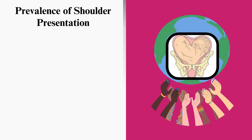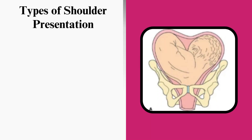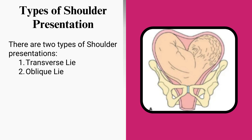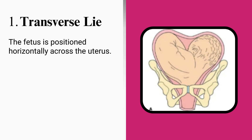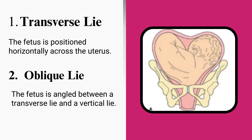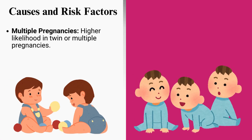Prevalence of shoulder presentation: it occurs in less than one percent of deliveries at term. There are two types of shoulder presentations. Number one: transverse lie, where the fetus is positioned horizontally across the uterus. Number two: oblique lie, where the fetus is angled between a transverse lie and a vertical lie.